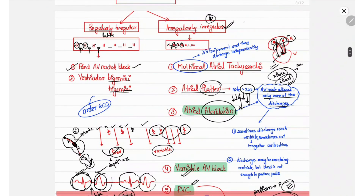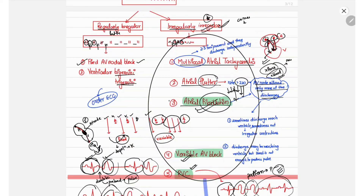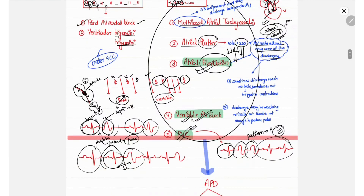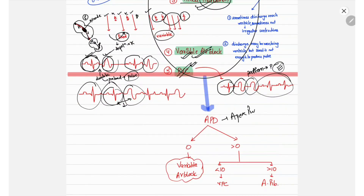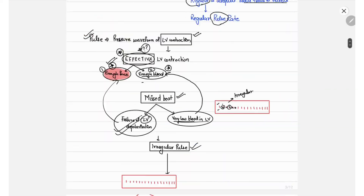Clinically, if a patient presents with palpitations and you palpate an irregularly irregular pulse, you need to differentiate between atrial fibrillation, variable AV block, and PVC. You can calculate the apex-pulse deficit: if it is 0, it indicates variable AV block; if it is greater than 0 but less than 10, it is due to premature ventricular contraction; and if it is greater than 10, it is due to atrial fibrillation. The reasoning behind this interpretation is explained in the heart rate versus pulse rate video.